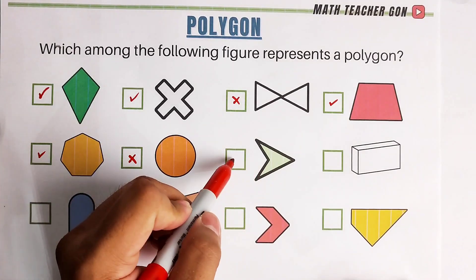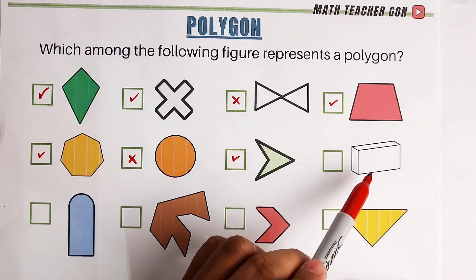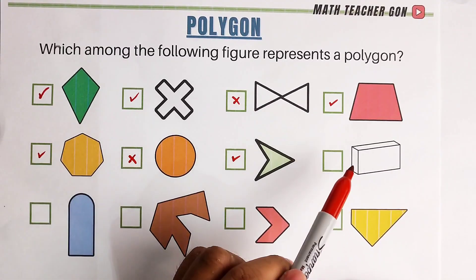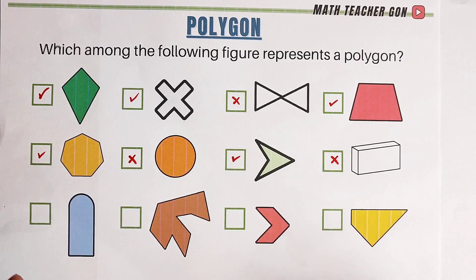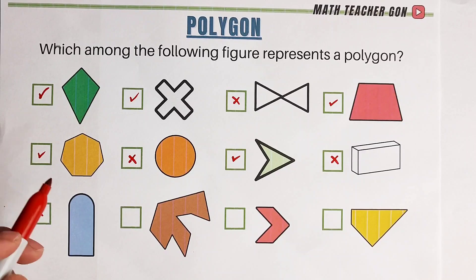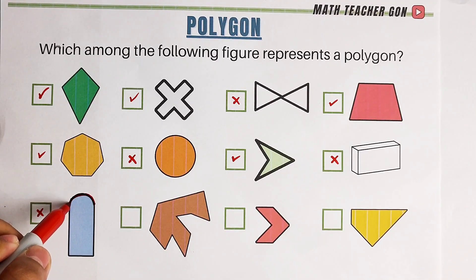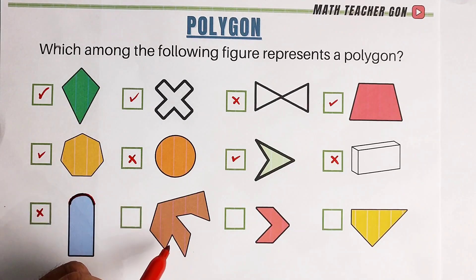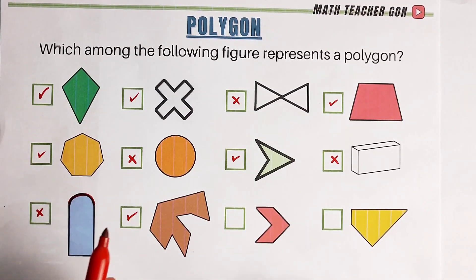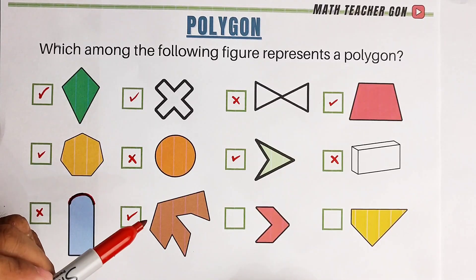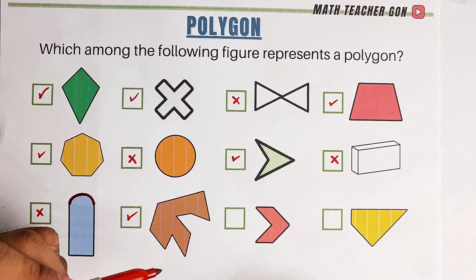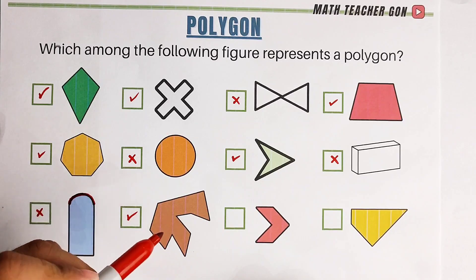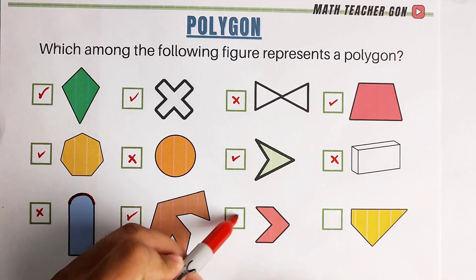What about this one? Yes, this one is a polygon. What about this shape? This one is a rectangular prism and it is a three-dimensional shape. Therefore, it is not a polygon. Why? Because polygons are two-dimensional shapes. What about this one? This one is not a polygon — basic reason — because of this part, it has a curve. What about this one? This one is definitely a polygon. Though it is irregular, all of the possible criteria are met: closed figure, flat shape, line segments, and the ends of the line segments are intersecting. This one is also a polygon.